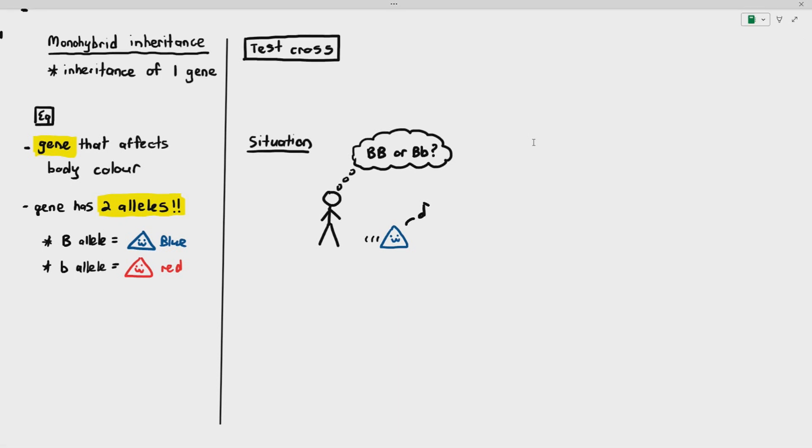So some of my students will say, well, we just cut it open and we check the DNA or something. And I mean, it is possible to check the organism's DNA. Obviously, there are technologies that allow us to do that, but there is an easier way to do it. So how do we determine its genotype? The way to determine its genotype is by doing a method known as the test cross.